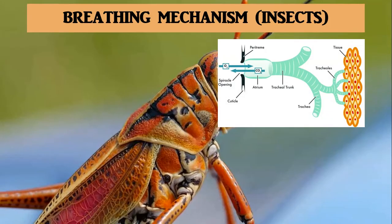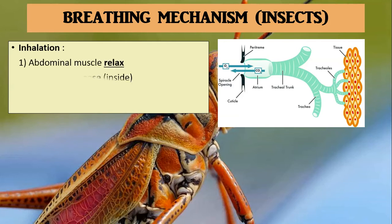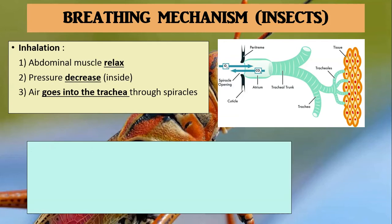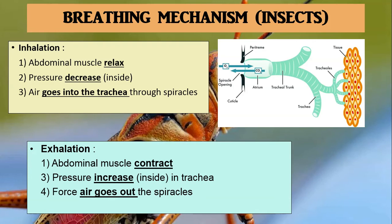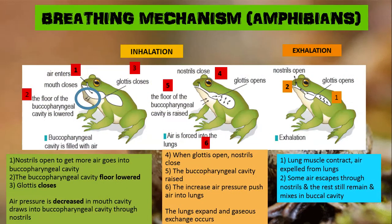We are going to discuss about the breathing mechanism in insects. It will involve two processes: inhalation and exhalation. During inhalation, the abdominal muscle will relax, then the pressure will decrease, and lastly the air goes into the trachea through the spiracles. Meanwhile, for exhalation, the abdominal muscle contracts, then the pressure increases in the trachea, thus forcing the air out through the spiracles.